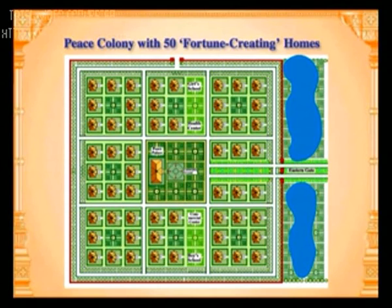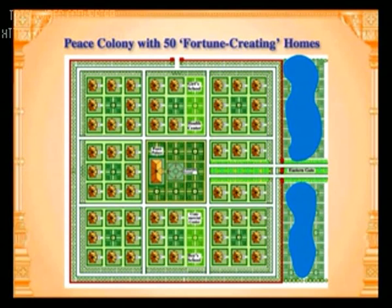The central park has a celebration ground, peace palace, and Vedic Gardens. All homes have an auspicious eastern entrance. Also included are a health center, commercial building, and schools for boys and girls with playgrounds. The natural beauty is enhanced by auspicious lakes in the east with decorative gardens.